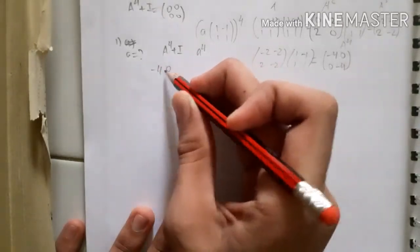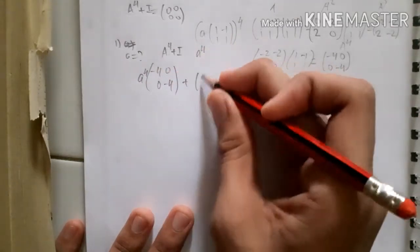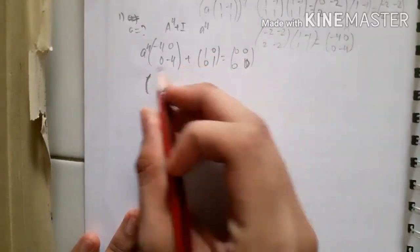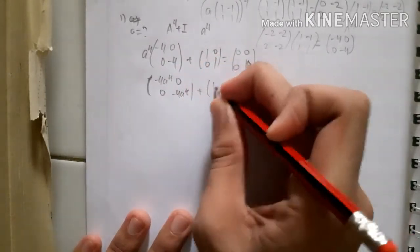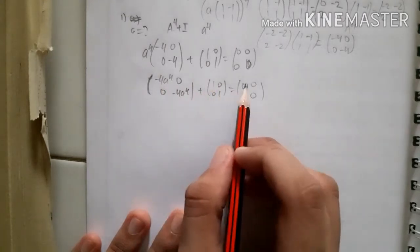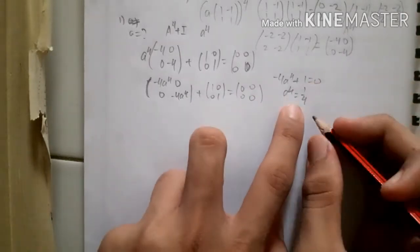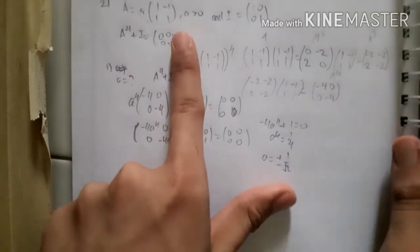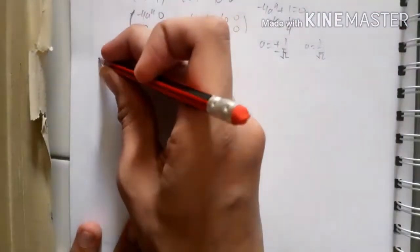Substituting into A⁴ + I = 0: [[-4,0],[0,-4]] plus a⁴*[[1,0],[0,1]] equals zero matrix. We multiply the constant a⁴ directly, so -4a⁴ + 1 = 0. Therefore a⁴ = 1/4, and a = plus or minus 1/2. Since a is greater than zero, the value of a is 1/2. That is the answer for part one.